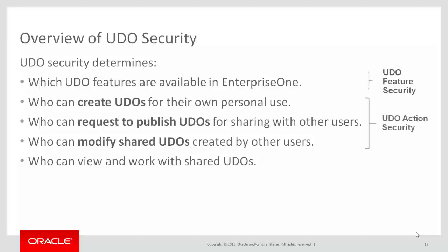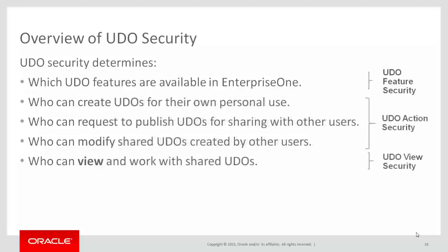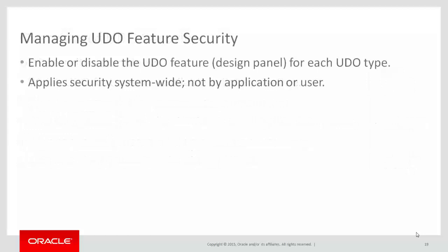And then you create UDO view security records to determine who can view and use shared UDOs. So let's look at UDO feature security in the Enterprise One Security Workbench, which you can use to enable or disable the UDO features. Remember that when you enable or activate a UDO feature, the feature appears system-wide on all Enterprise One application forms that support the UDO feature.